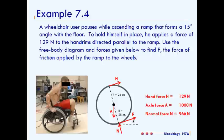In this video, we'll solve example 7.4, which reads: a wheelchair user pauses while ascending a ramp that forms a 15-degree angle with the floor. To hold himself in place, he applies a force of 129 newtons to the hand rims directed parallel to the ramp, use the free body diagram and forces given below to find F, the force of friction applied by the ramp to the wheels.